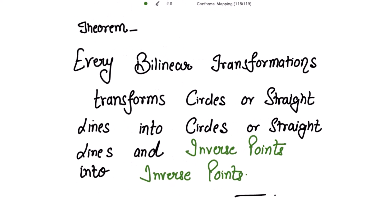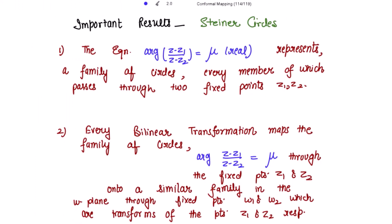This is also a very important theorem. The theorem states that every bilinear transformation transforms circles or straight lines into circles or straight lines, and inverse points into inverse points. This also includes the important results on Steiner circles. The first is the Steiner circle of the first kind: the equation arg((z − z1)/(z − z2)) = μ, where μ is real, represents a family of circles every member of which passes through two fixed points z1 and z2.